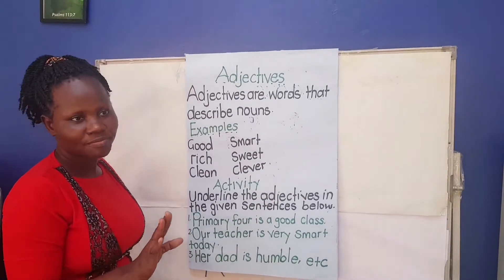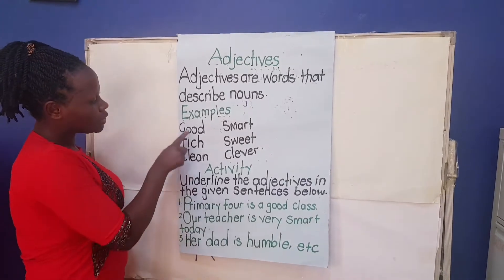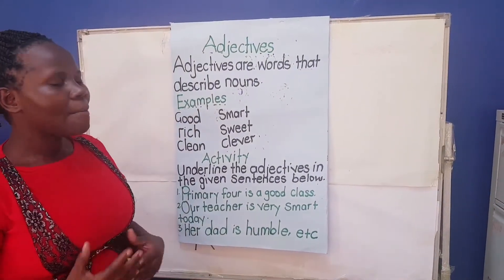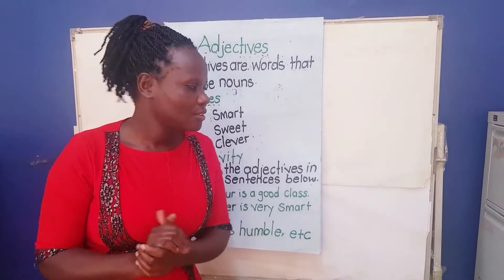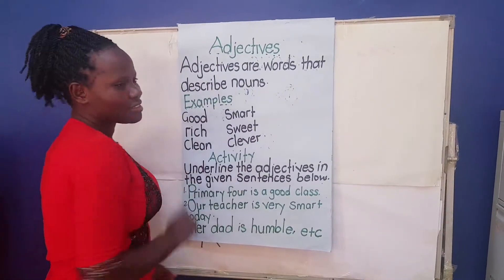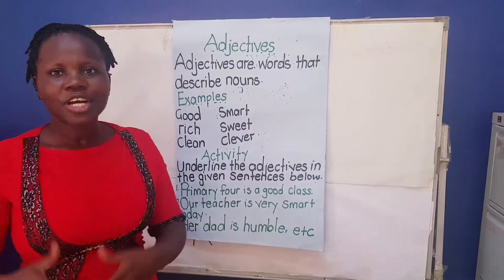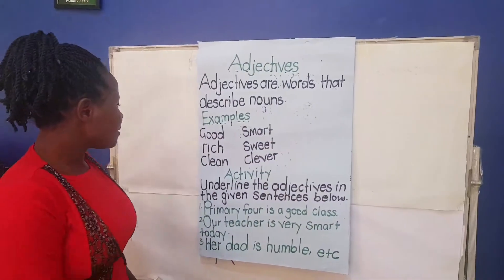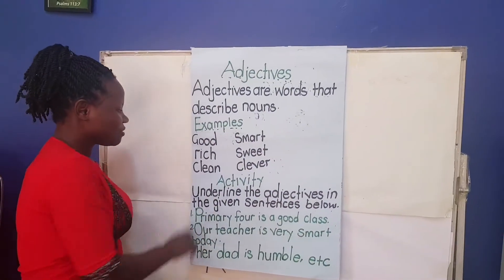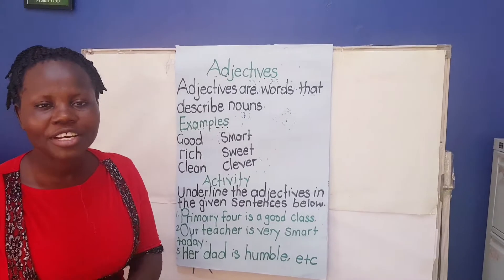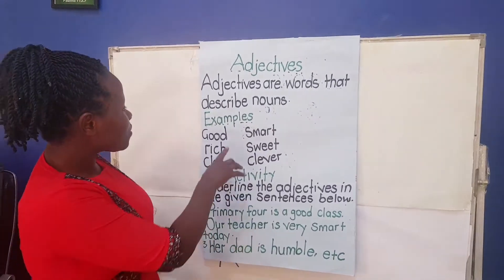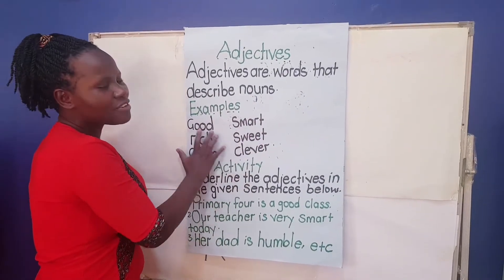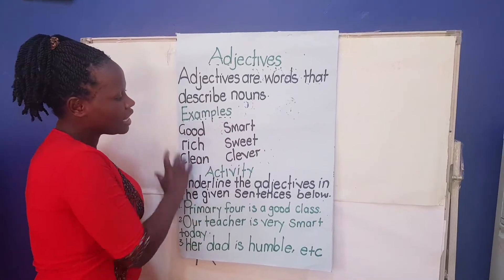It can describe a noun of your choice. For example, the word good — I can say, I'm a good girl. The word smart — Shadarine is a smart teacher. We have the word rich — my father is a rich man. So these adjectives can describe very many nouns.